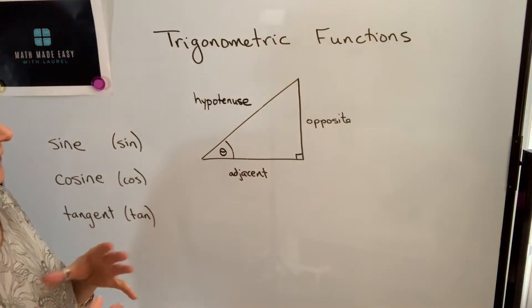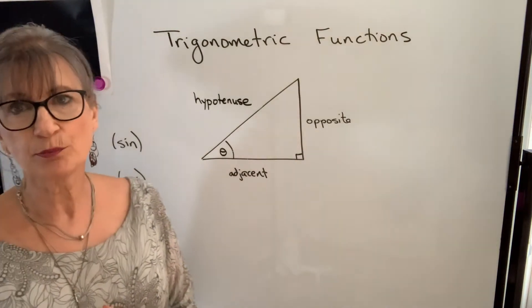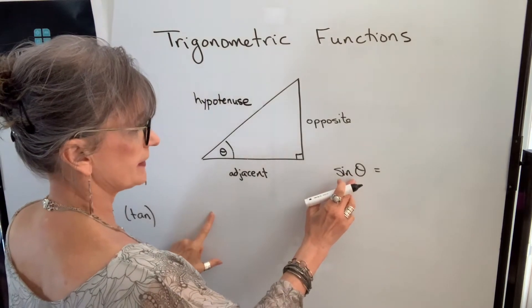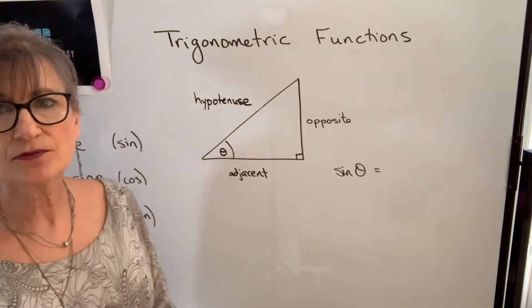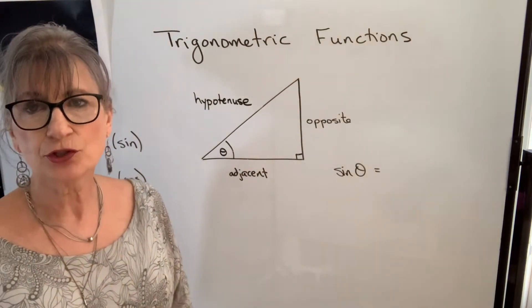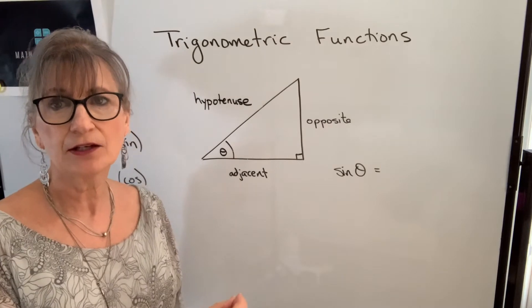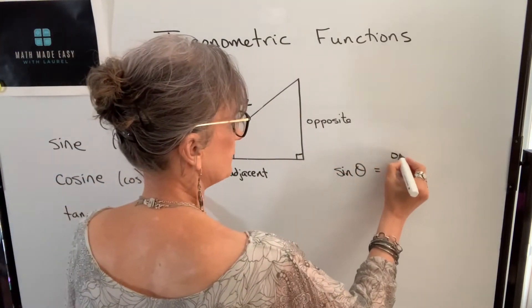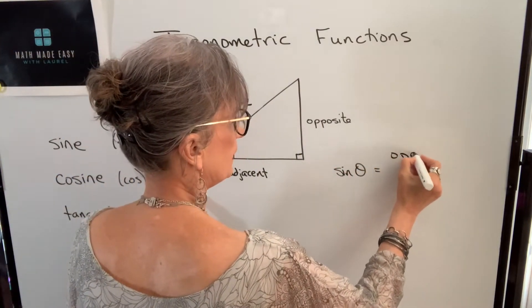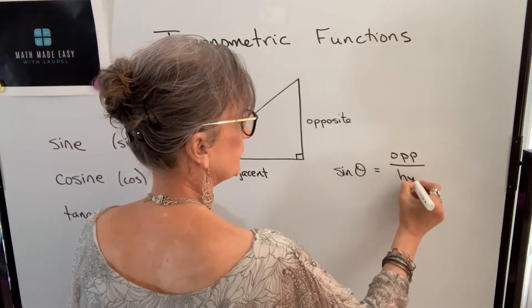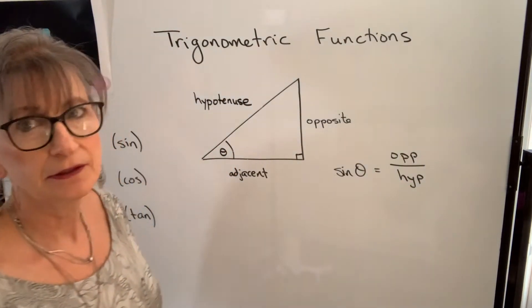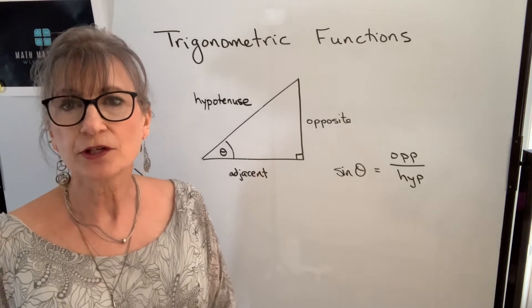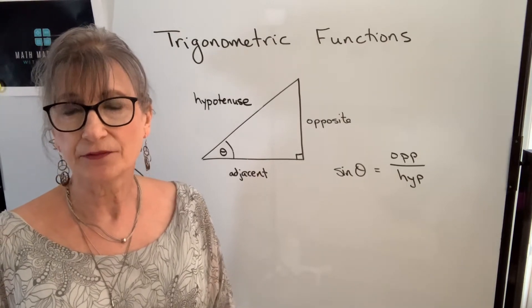The definition of the trig functions are simply ratios of sides. Our first trig function is the sine function, and it's always defined as the ratio of the side opposite the angle to the hypotenuse — so it would be opposite over hypotenuse. That ratio of those two sides in a right triangle is called the sine of the angle.